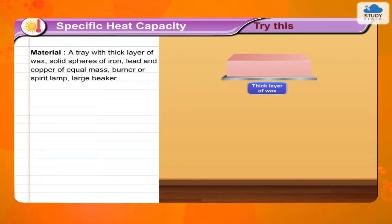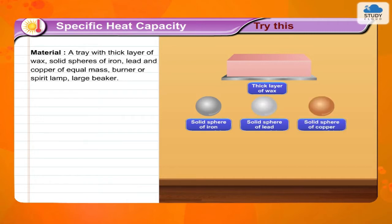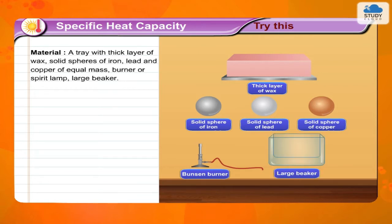Specific Heat Capacity — Try this experiment. Materials needed: a tray with a thick layer of wax, solid spheres of iron, lead, and copper of equal mass, a burner or spirit lamp, and a large beaker.